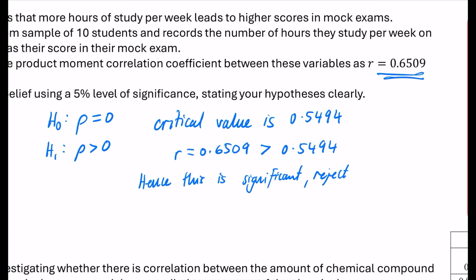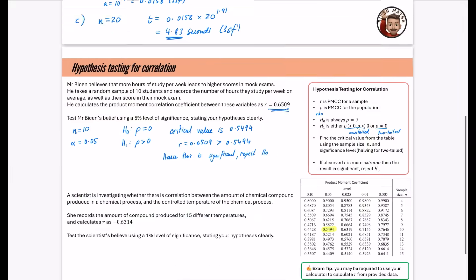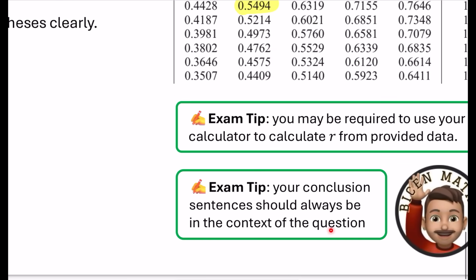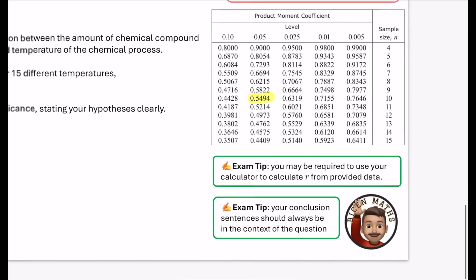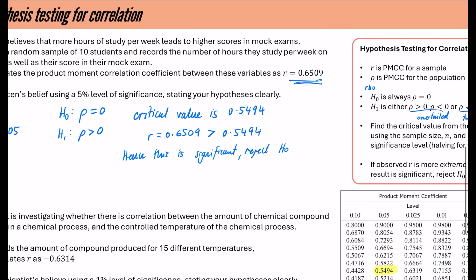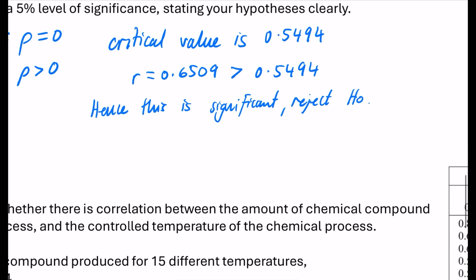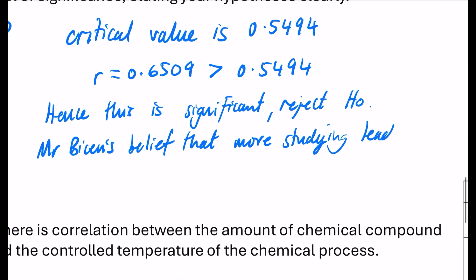So, we can reject H0, but that would not get the final mark, because of my exam tips we've got down here. Your conclusion sentences should always be in the context of the question. I'm going to remind you again, you may need to calculate R from provided data on your calculator. So, I need to put this in the context of the question. Reject H0. Mr. Bison's belief is supported. Mr. Bison's belief that more studying leads to higher scores in mock exams is supported. If you wanted to, you could also say there is a positive correlation between them.